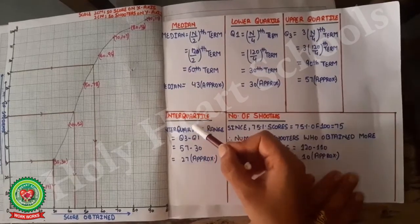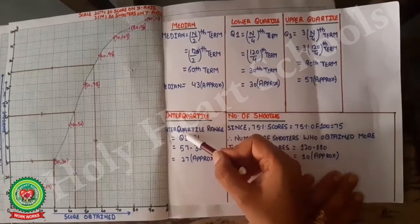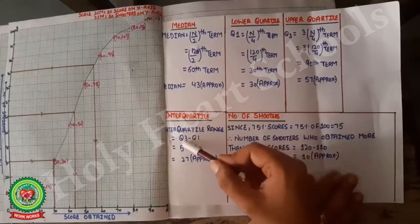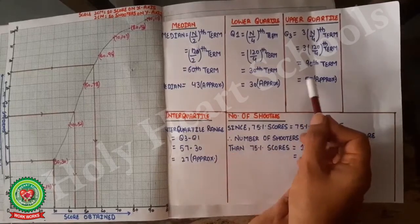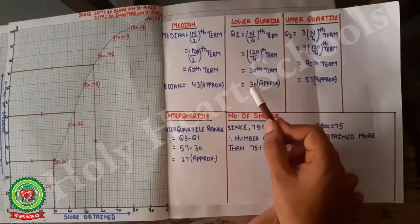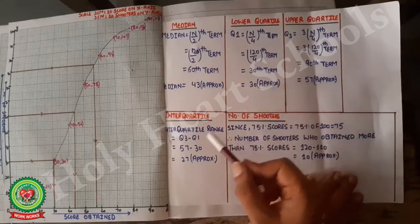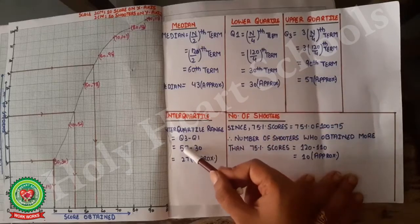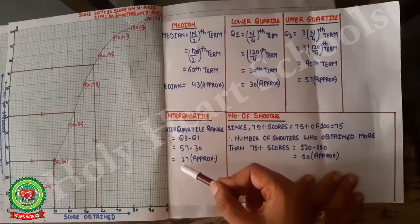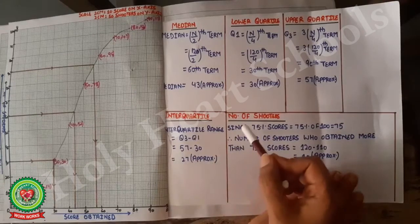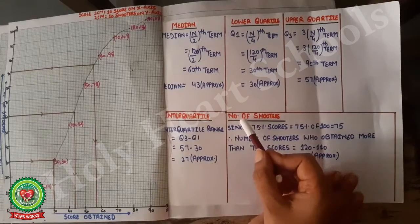Now the next part is the interquartile range. The formula is Q3 minus Q1. We subtract the answers of both quartiles: 57 minus 30 gives the interquartile range, which is approximately 27.